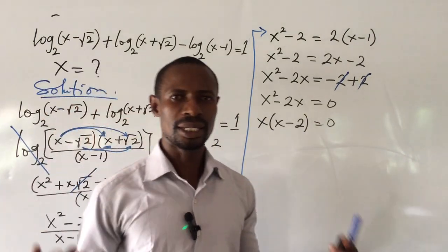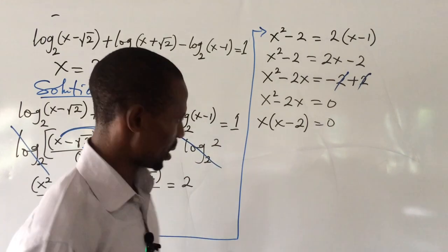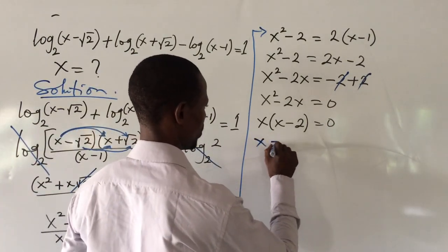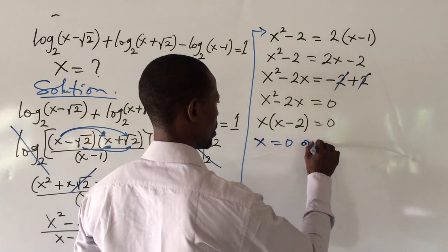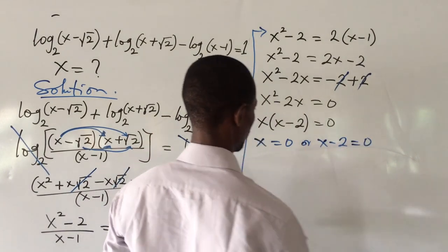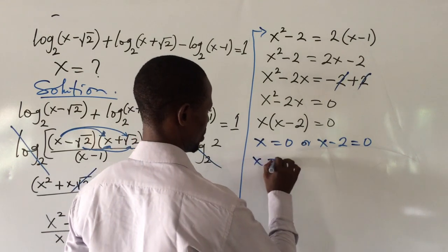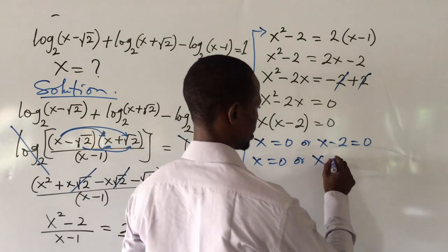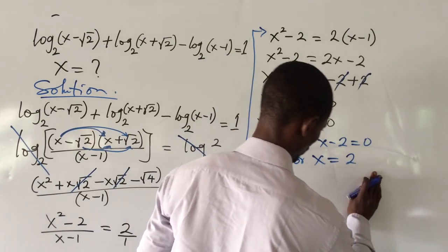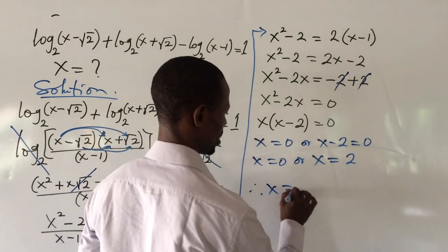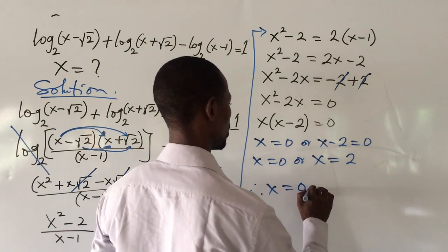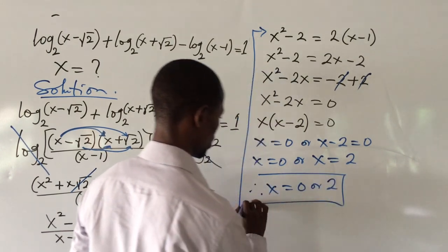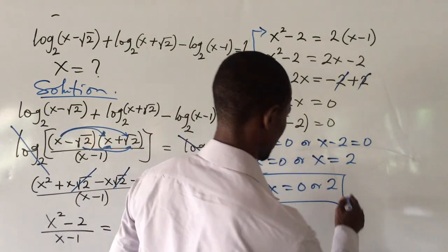Applying the zero product property: x equals 0, or x minus 2 equals 0, giving x equals 2. So x equals 0 or x equals 2. These are the two possible values for x.